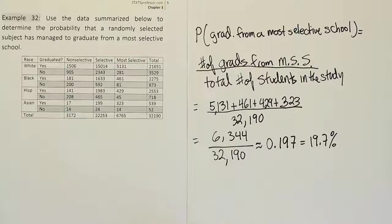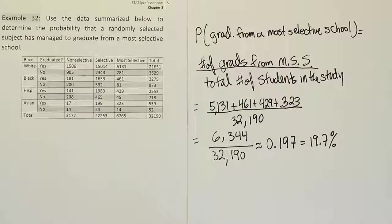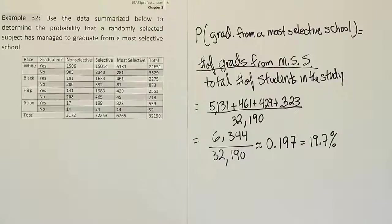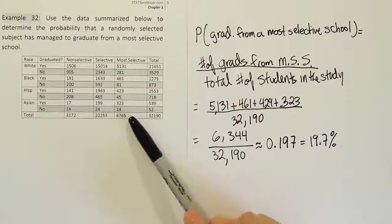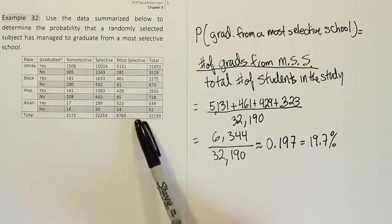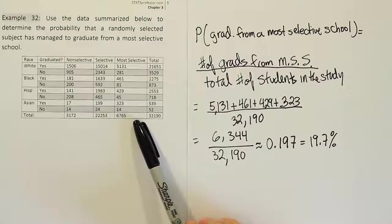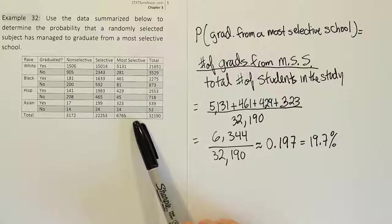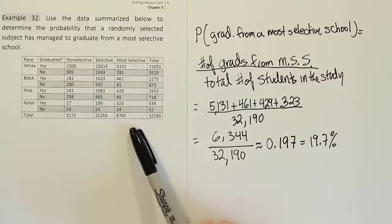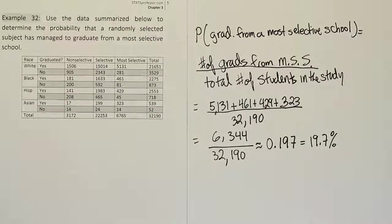Okay, so last thing I want to say about the problem is that you may have thought we should use a different total. Like maybe you would think, well, why don't we use the total from the most selective school category? Well, that would give us the percent of students who graduated from most selective schools out of the people who attended most selective schools. That's not what the problem asked us though.